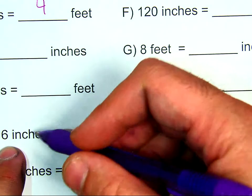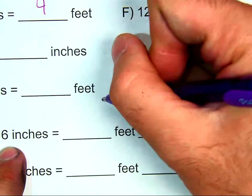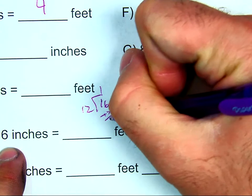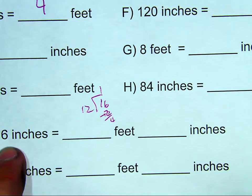So I know, okay, 12 can go into 16 one time, so I have 16 divided by 12 is going to be 1. I have a remainder of 4. That's what this is asking for. It's asking for the remainder.